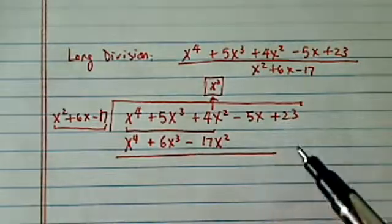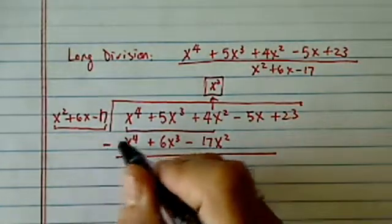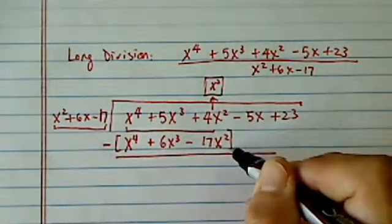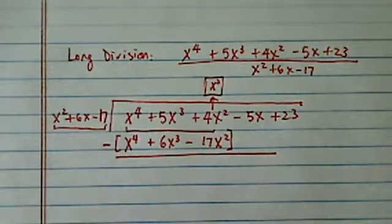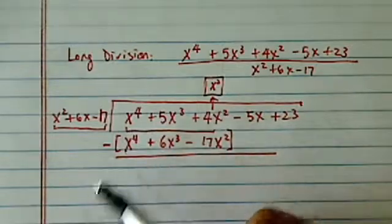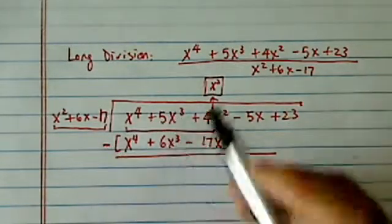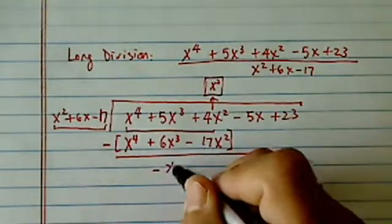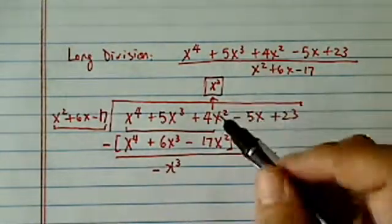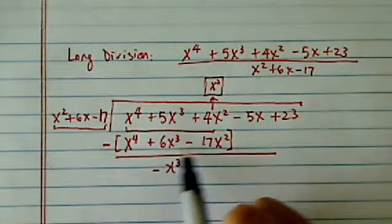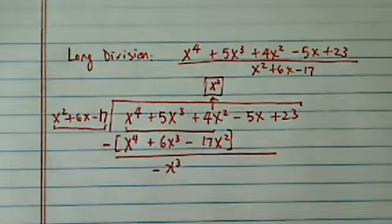Now next thing is a little tedious in that we have to subtract. The best thing I've found over the years is you vocally, verbally speak it. So x fourth minus x fourth, it's gone. Then 5x cubed minus 6, that gives me minus x cubed. Another thing you can do is distribute this one and treat it as adding sign. If it works for you, great. Try it.